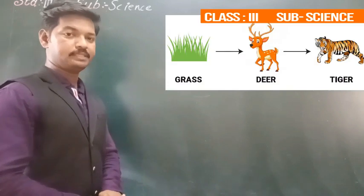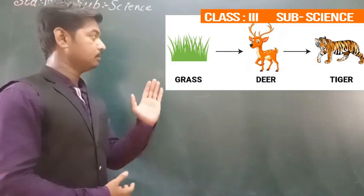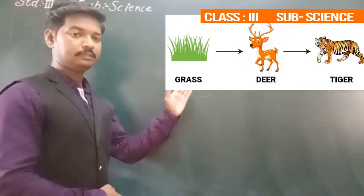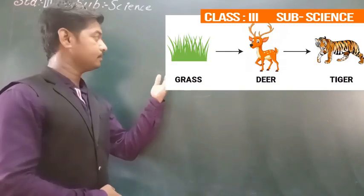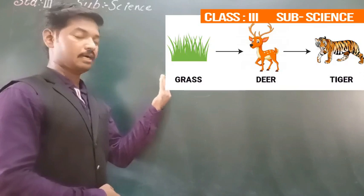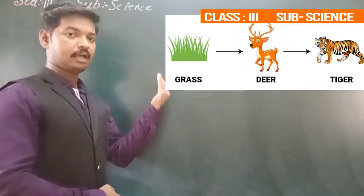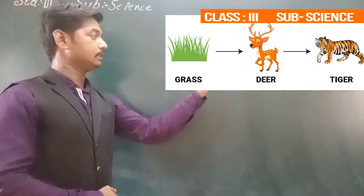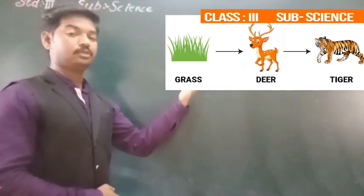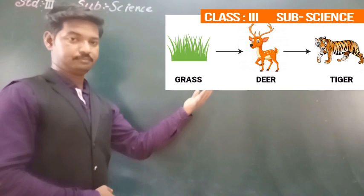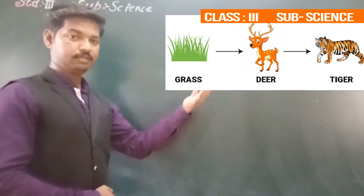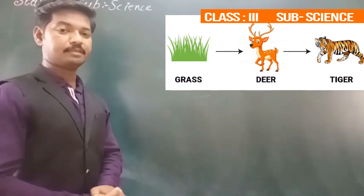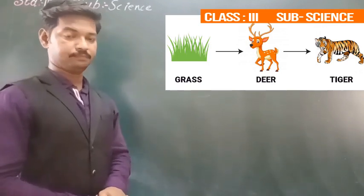In this example you will see a deer eats grass and a tiger eats deer. So it is an example of food chain.